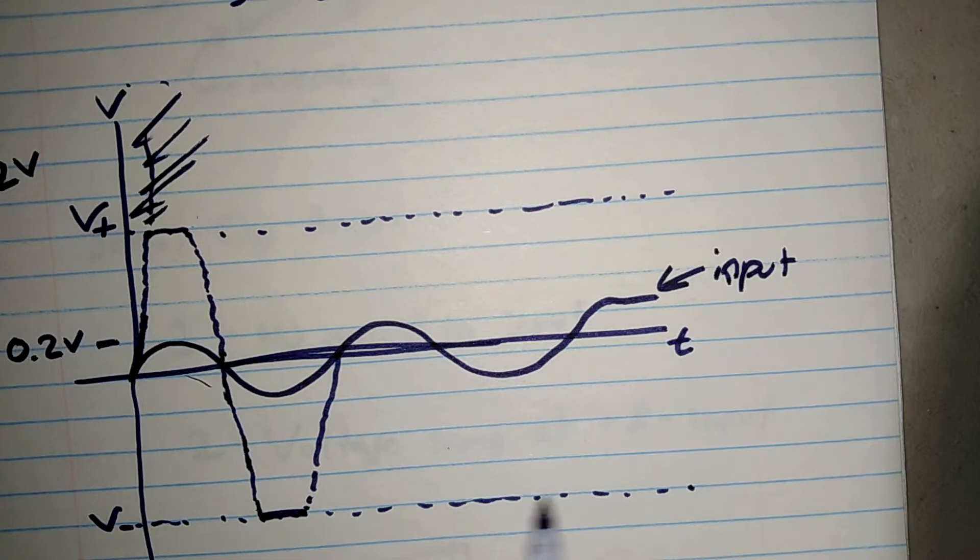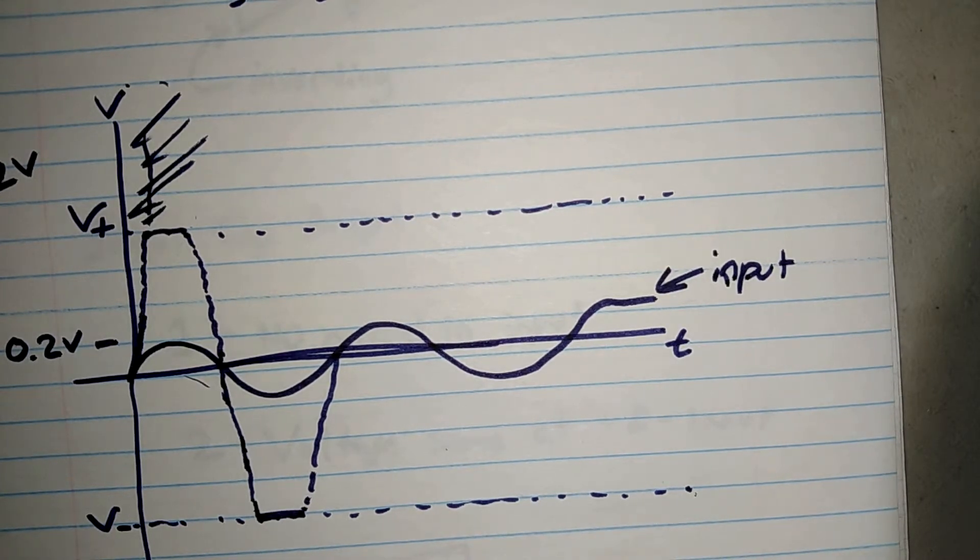The saturated region is over here, and if it goes anywhere above, it's over-saturated and will not produce the desired voltage we want.